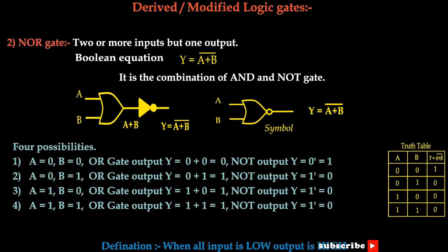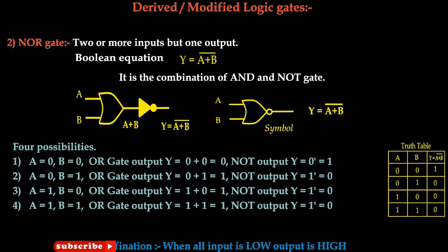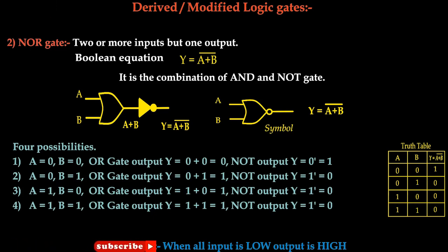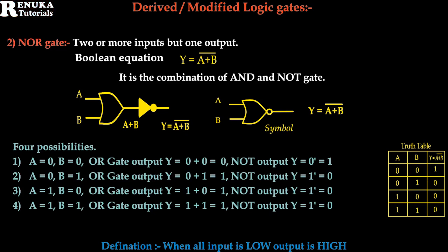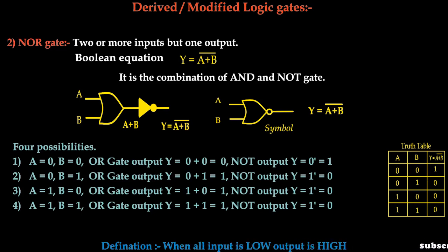The second derived gate is the NOR gate. It is constructed using an OR gate and a NOT gate — the OR gate is connected first, then its output is given to the NOT gate. With four possible combinations: if both inputs are 0, the OR gate gives 0 plus 0 equal to 0, and 0 is inverted by the NOT gate to give 1 at the output. If A equals 0 and B equals 1, the OR gives 1, complemented to 0. If A equals 1 and B equals 0, OR gives 1, complemented to 0. If both inputs are high, OR gives 1, complemented to 0. We define it as: when all inputs of the NOR gate are low, the output is high.